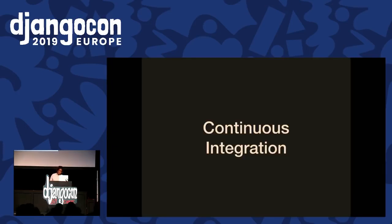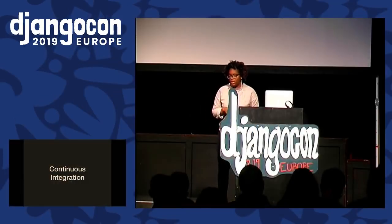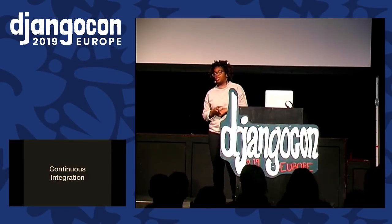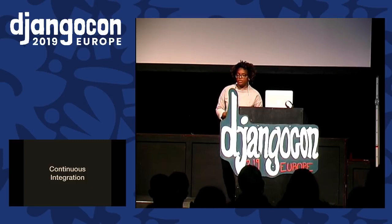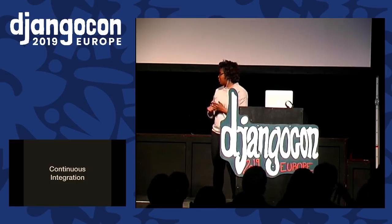The last and most challenging part of this entire implementation is continuous integration. All these things work so nicely on your local environment — Selenium is headless, life is good, it gives you an output document. But what do you do when it's time for CI and someone else needs to validate that your CSS changes are fine? This was probably the biggest challenge of the whole project.